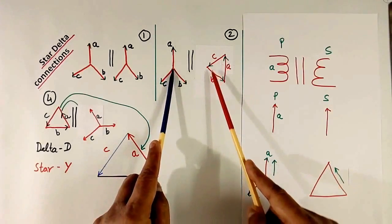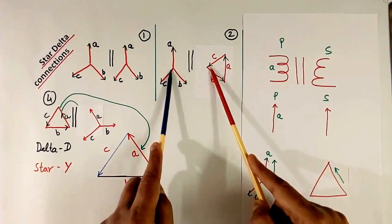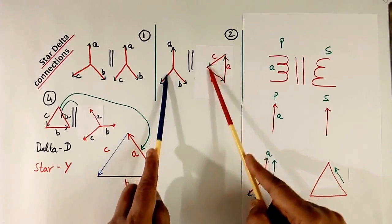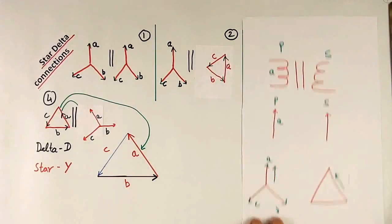Similarly B phase, primary is this, secondary is this. And C phase, exactly similar. So shape will come like this, not like this.